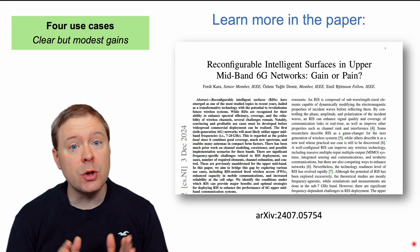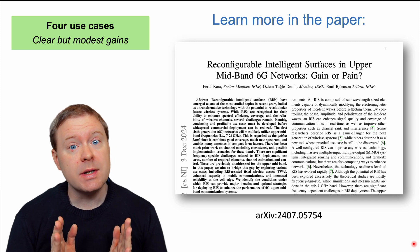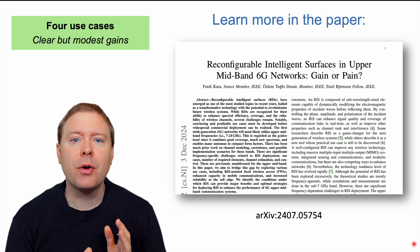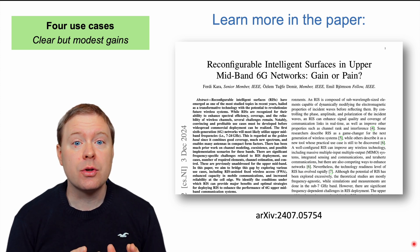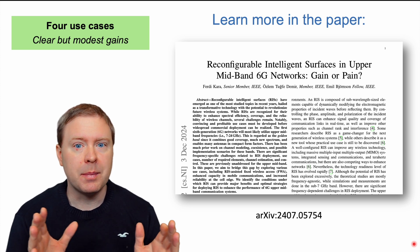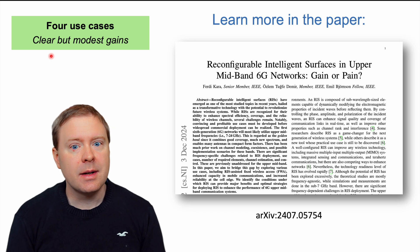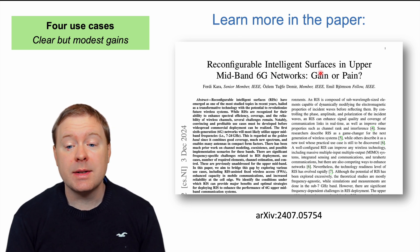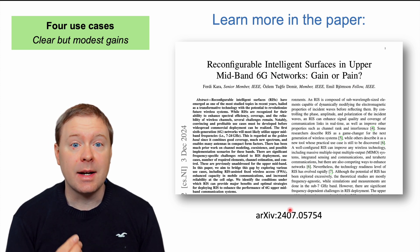Those were the four main use cases for RIS technology in the upper mid-band. What we could see is a clear but modest gain from adding a RIS in these scenarios. Perhaps the largest gain occurs when deploying a RIS to improve coverage in one particular region of interest. If you want all the details, check out our paper, 'Reconfigurable Intelligent Surfaces in Upper Mid-Band 6G Networks: Gain or Pain,' available on arXiv with a link in the description. Thank you very much for watching.